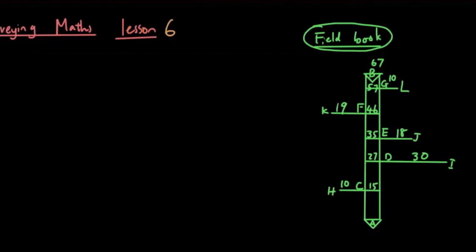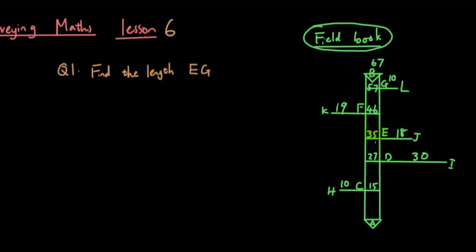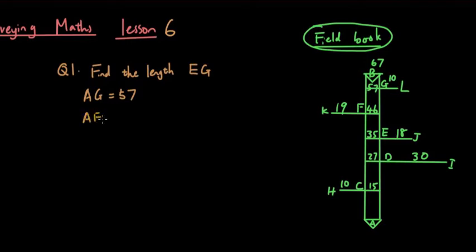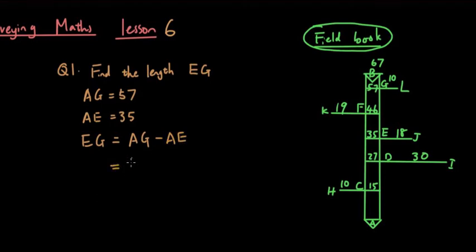The first question is: find the length EG. That means we want the distance from point E to point G. From A to G the distance is 57, and from A to E the distance is 35. So from E to G the distance must be A to G minus A to E.